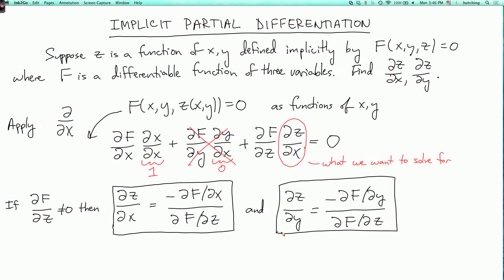Now, if you're being very careful here, you might remember that the chain rule assumes that all of the functions involved are differentiable. So to apply the chain rule, we need to know that z is a differentiable function of x and y. And how do we know that?